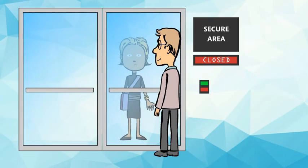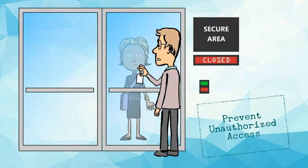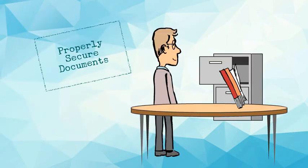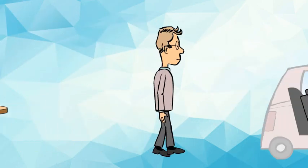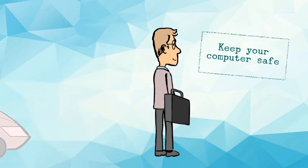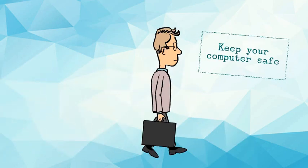Bob's got to help prevent unauthorized access to our buildings. He's got to properly secure documents containing personal or confidential information. And he's got to keep his computer safe at home and in transit.